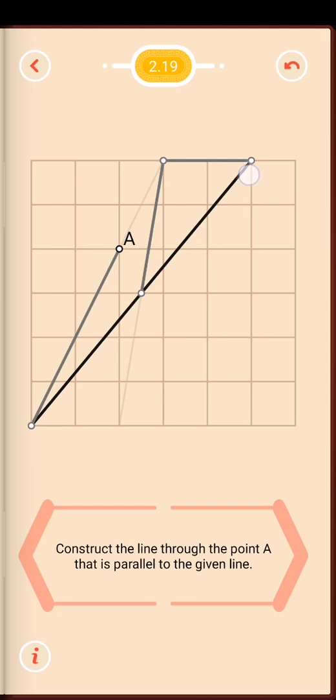Then go from our leftmost point through that point, see how far it extends, and get the point where it intersects. Then go from A to where that one intersects and look at our parallel.